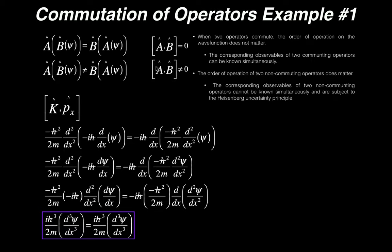Now if Â and B̂ do not commute, I denote that the same way — [Â, B̂] — but it does not equal zero. That means if I operate on wave function ξ first with B̂ and then with Â, it would not give the same result as first operating with Â and then B̂. So if you're asked whether two operators commute or whether two observables can be known simultaneously, you set up an equation just like this.